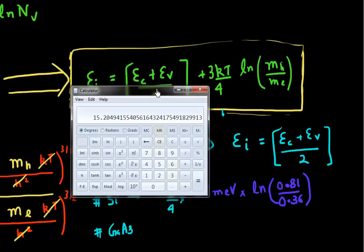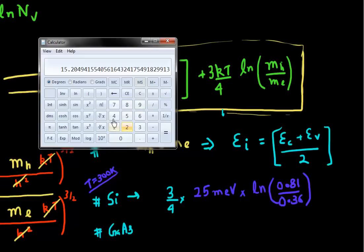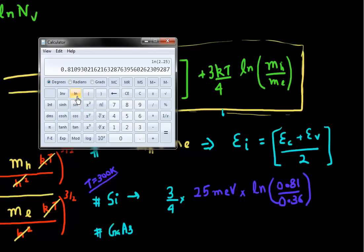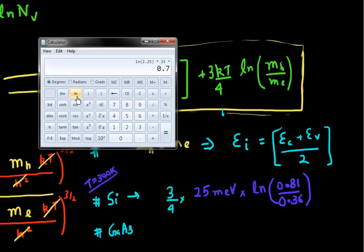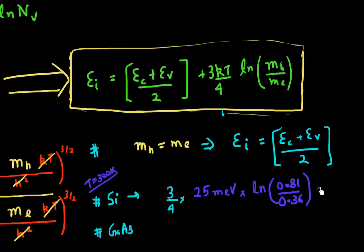Let me pull up a calculator. I can evaluate 0.81 divided by 0.36, take the natural log of that, multiply it by 25, and then multiply it by 0.75. This gives a value of approximately 15 milli-electron volts.